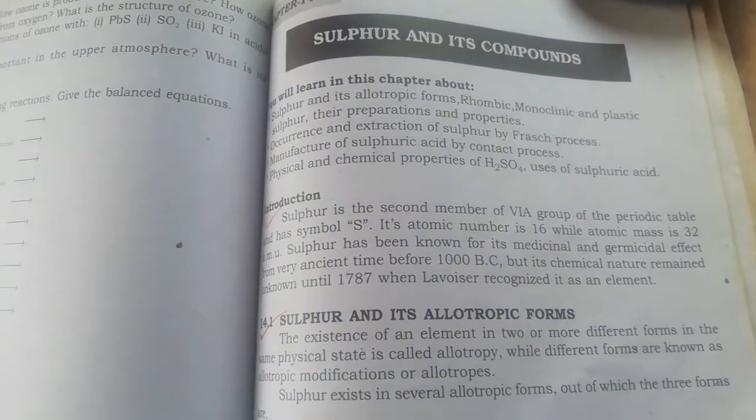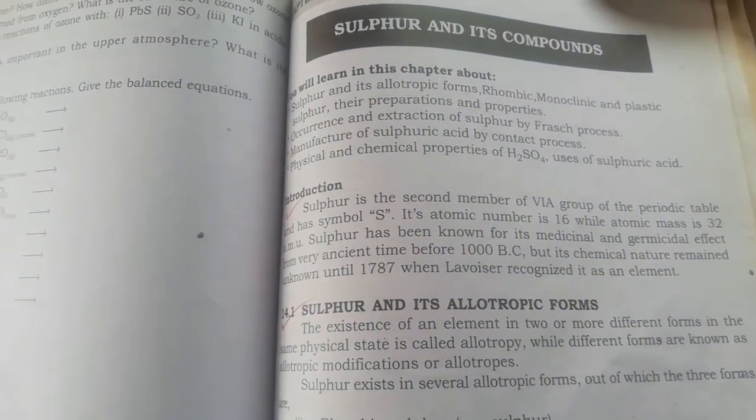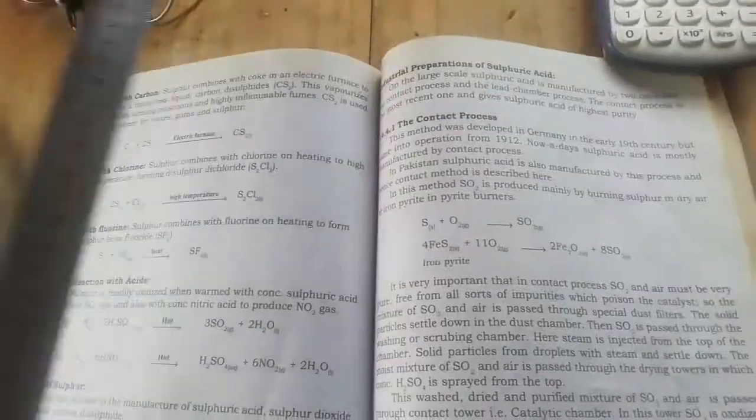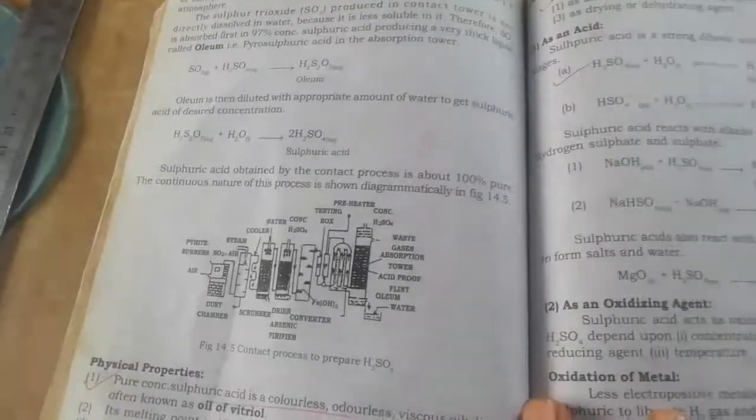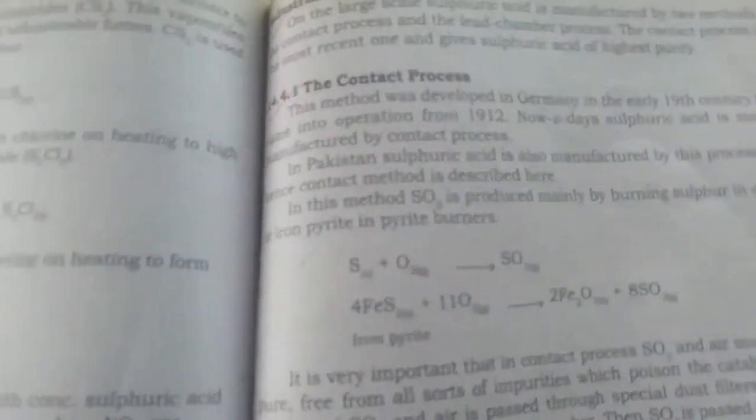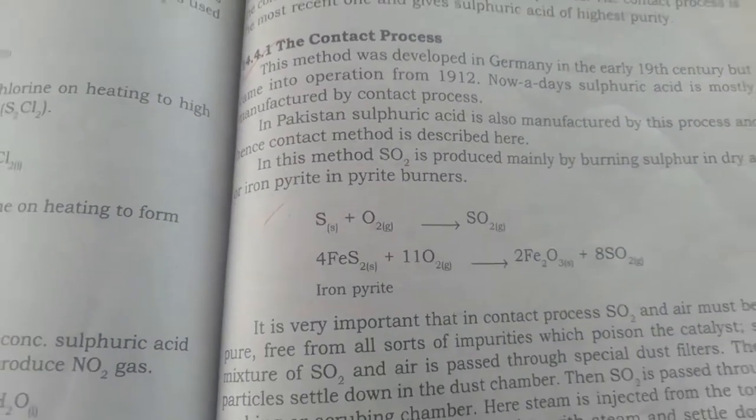Assalamu alaikum students. This is the book of chemistry for 10th class students. Chapter name is sulfur and its compounds. Today students I will teach about how we prepare sulfuric acid by contact process. Students, in exams long questions are asked how we prepare the sulfuric acid by contact process.